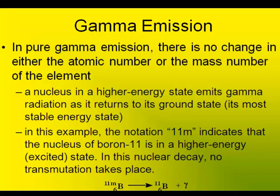With gamma emission, the equation is pretty simple. Boron-11 still is boron-11, but the M simply denotes that boron-11 is in some high energy state. When boron-11 goes into a low energy state, it has to emit its energy in the form of a gamma ray, or gamma emission.